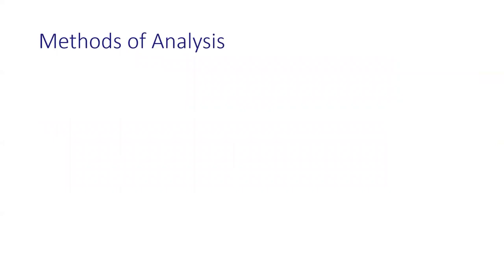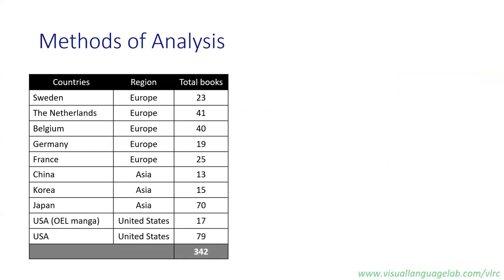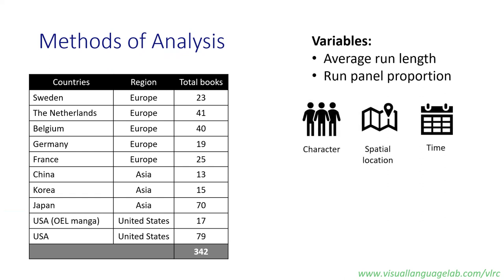Our corpus included a total of 342 books across nine different countries. More information about this corpus can be found on the Visual Language Lab website. We applied our two variables of run length and proportion to this data, and we looked at runs for characters, spatial locations, and time separately.